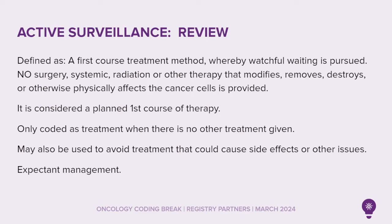It's closely watching a patient's condition, but not giving any treatment unless there are changes in test results that show that the condition is getting worse. Active surveillance may be used to avoid or delay the need for treatment, such as radiation therapy or surgery, which could cause side effects or other problems. During active surveillance, certain exams and tests, such as blood tests, imaging, and biopsies, are done on a regular schedule to monitor the condition.